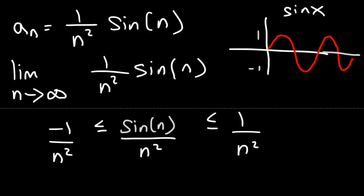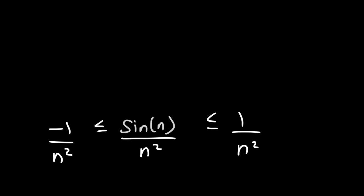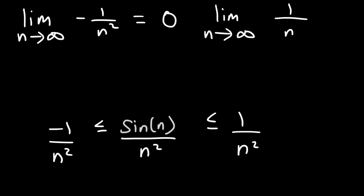So now in this form we can apply the squeeze theorem. What is the limit as n approaches infinity for negative 1 over n squared? Well we know that's going to be equal to 0. Negative 1 divided by a very large number will give you a small number. Likewise the limit as n approaches infinity for positive 1 over n squared is also 0.